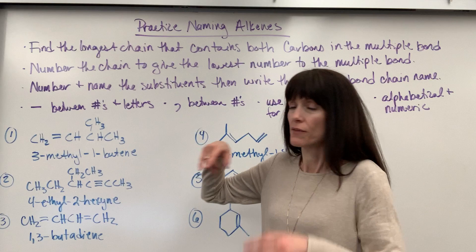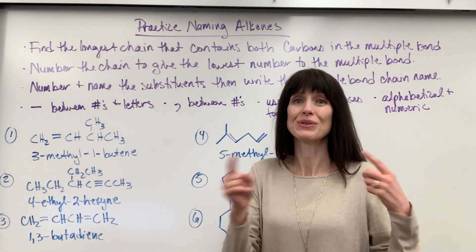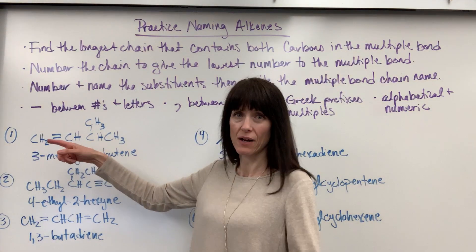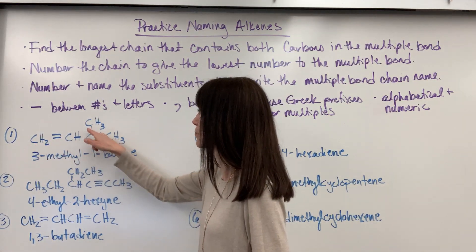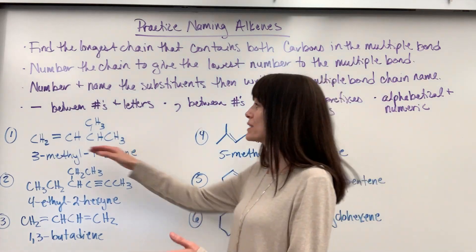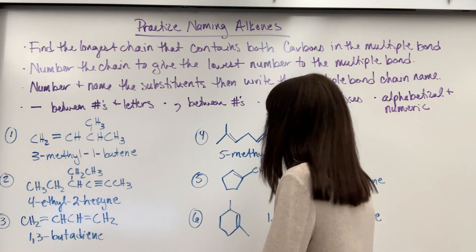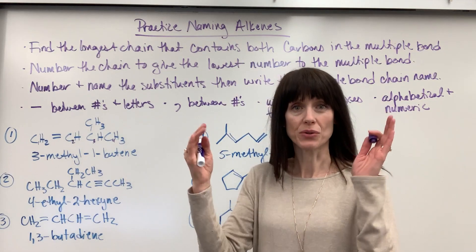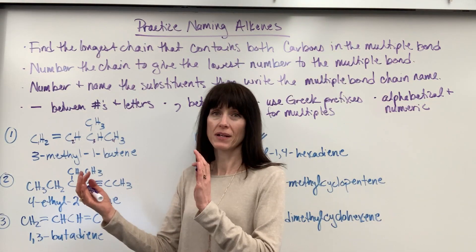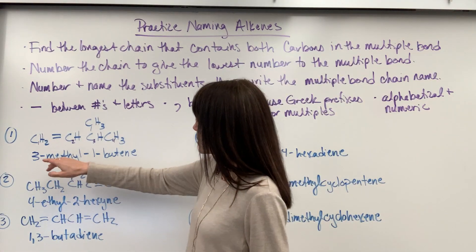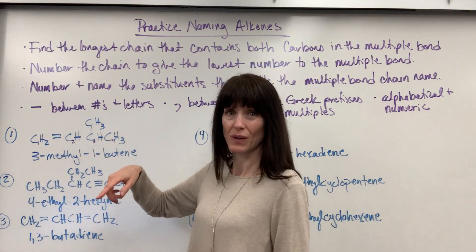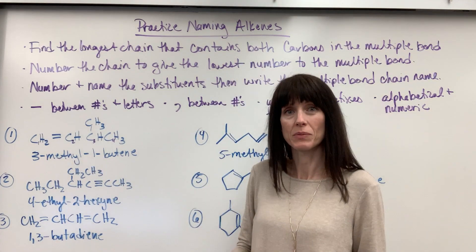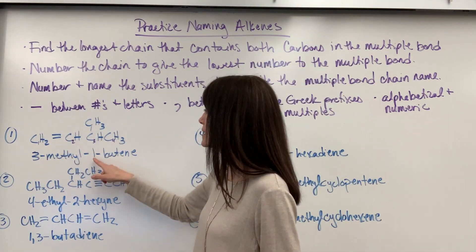Let's look at this first example. I want to find the longest parent chain that includes the double bond. I find my double bond, and counting the longest chain gives us four carbons. I'll count straight across: carbon one, two, three, and four. We always include the double bond in the parent chain and give it the lowest numbers possible. My substituent — this methyl group — ends up being on the third carbon. So here's my substituent: three-methyl, with a dash between the numbers and the letters.